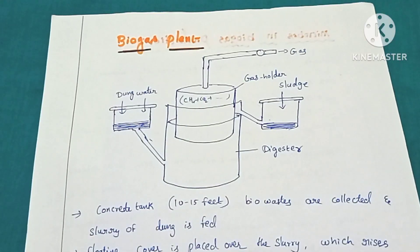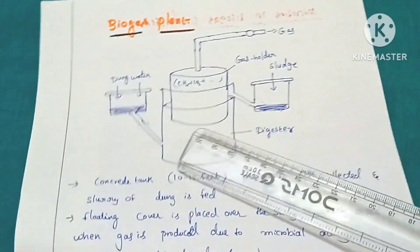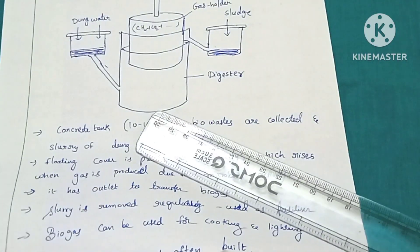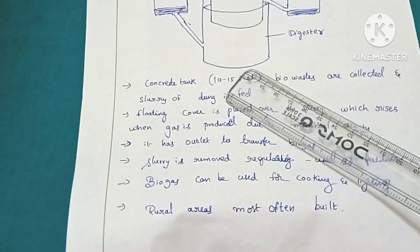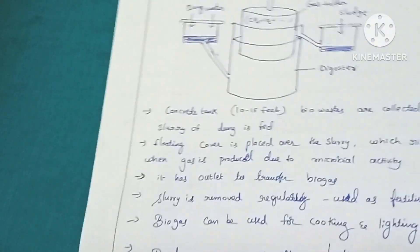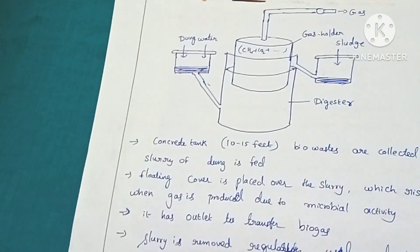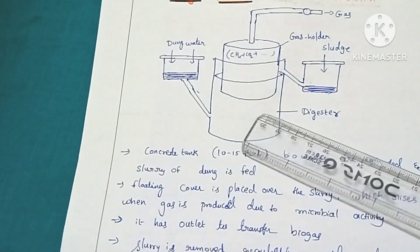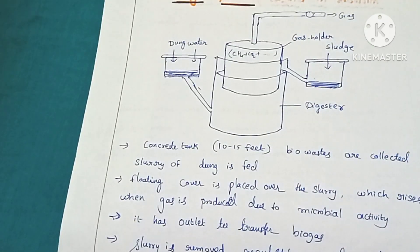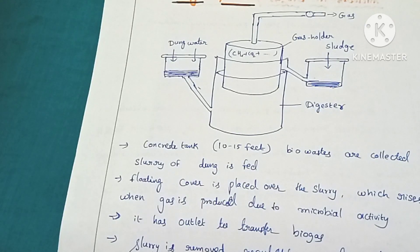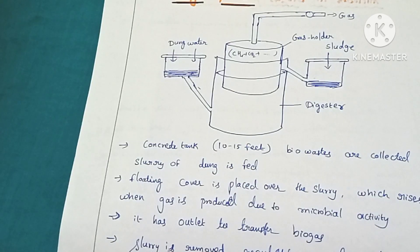Now we will look at the biogas plant. In the biogas plant, there is a concrete tank which is 10 to 15 feet in size. The bio-waste generated in rural areas is collected, mixed with water, and made into a slurry. The dung and other waste material are released through an inlet into the concrete tank, where water is mixed to form the slurry.